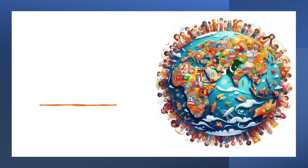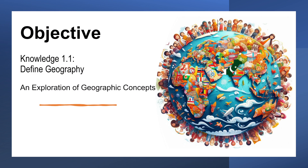Have you ever thought about why I asked you these questions? What did this quiz tell us? How do we know about the world — how do we locate things? Very good — that is called Geography! And today we are going to read an introduction to it. Our today's objective is Knowledge 1.1: define geography, which will be an exploration of geographic concepts.